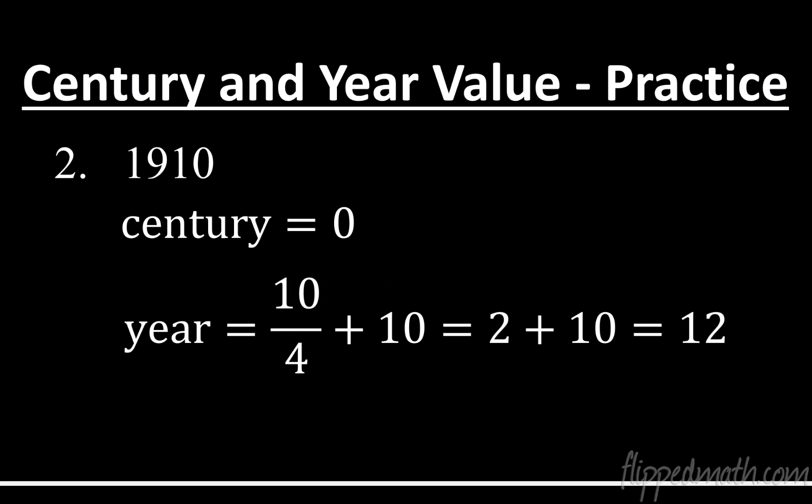So now what do we do here? We're going to combine the century and year value. That combines together to give us 12. And can that reduce? Yeah, it could. But when you divide by seven, yeah, you're going to divide by seven. The remainder is going to be five. Or you could just reduce it down to five. It's the same thing. All right, let's do another one.